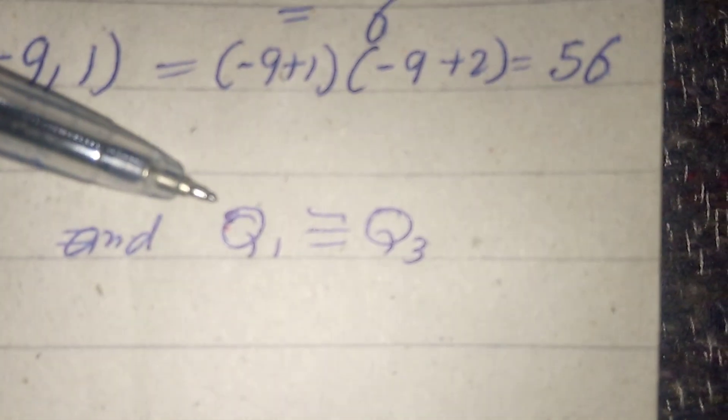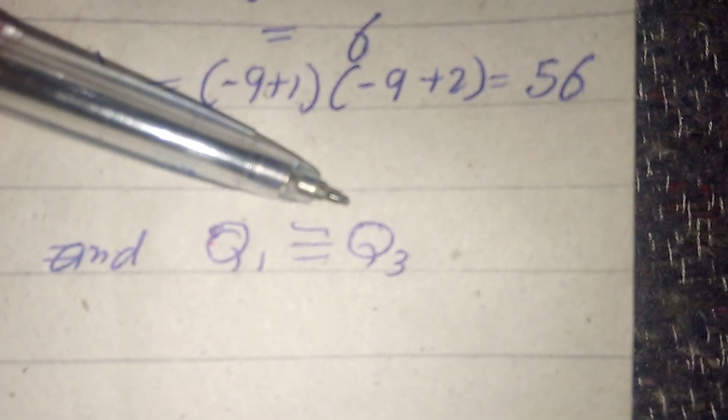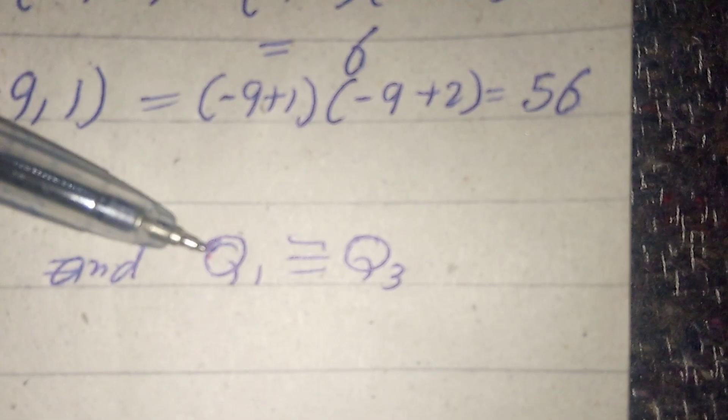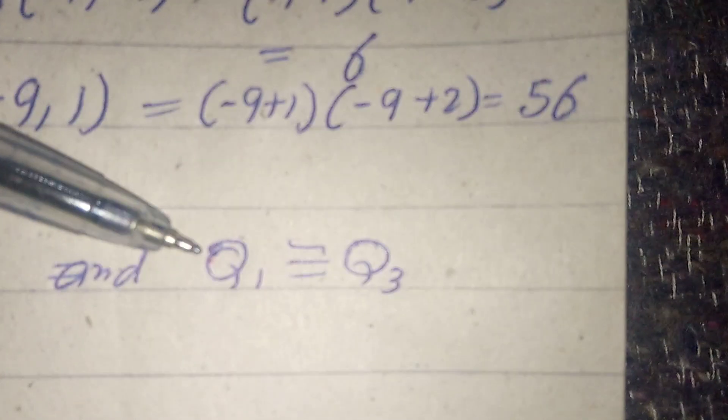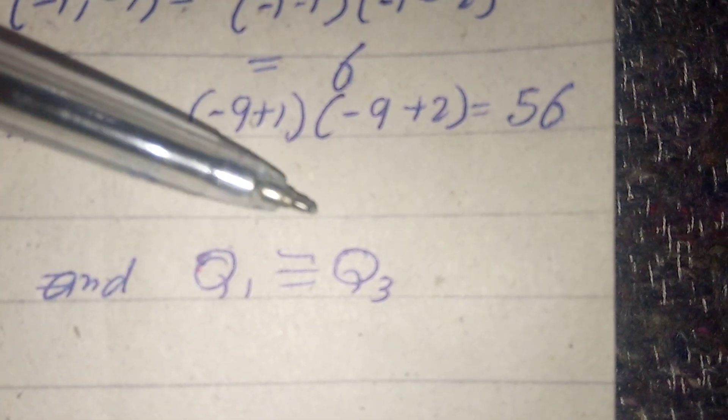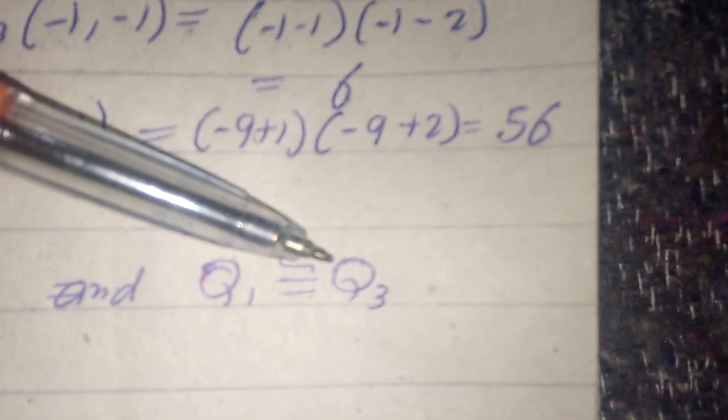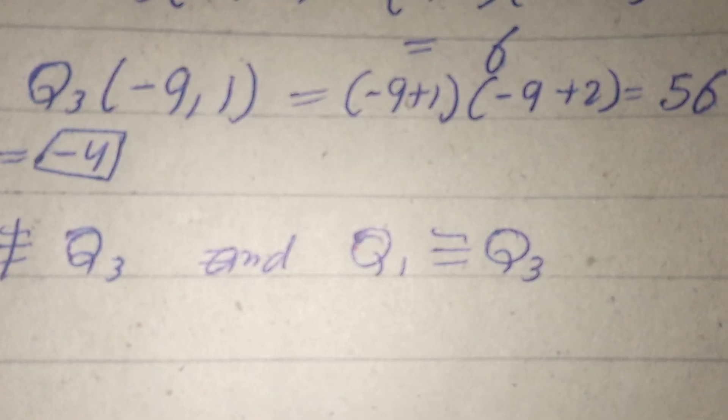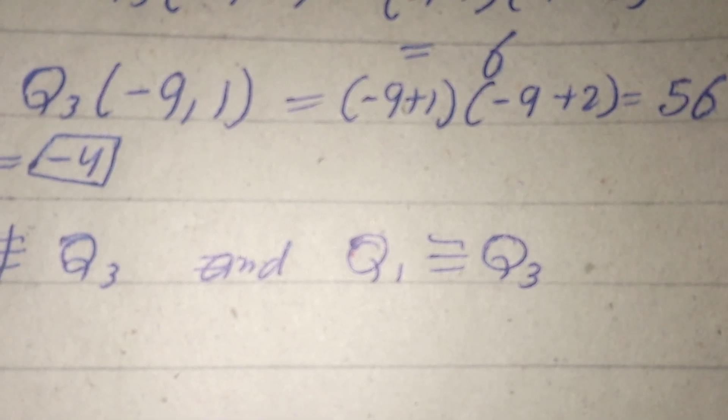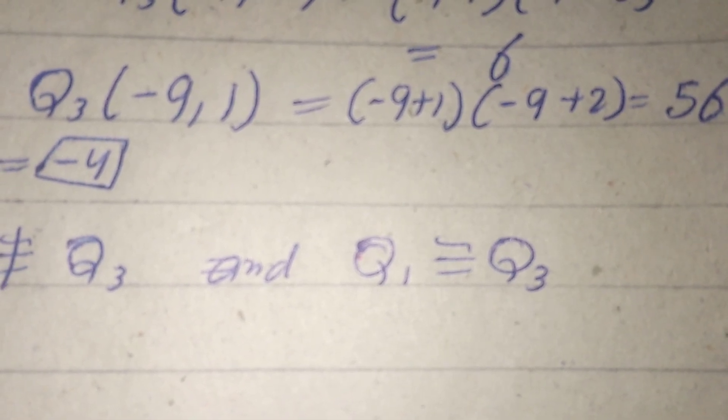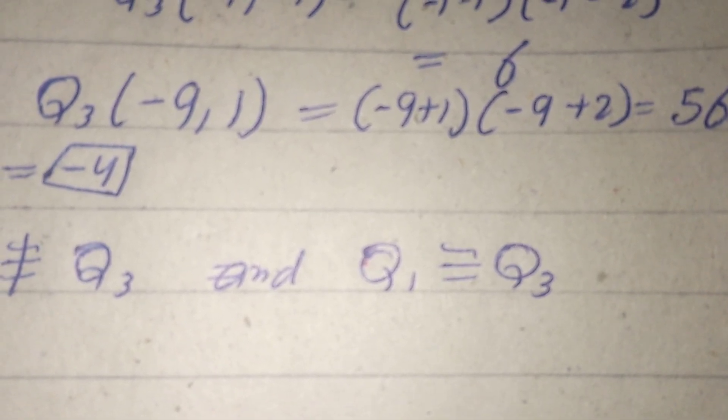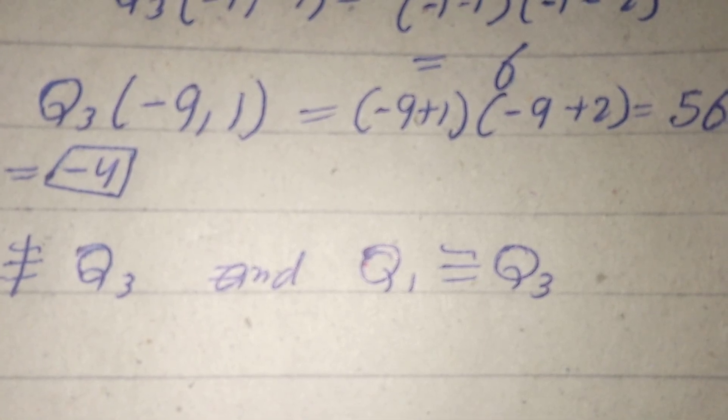So what remains is that q1 is equivalent to q3, because q1 can take positive and negative values. Similarly, q3 also takes positive and negative values. So we have shown that q1 is equivalent to q3, but they are not equivalent to q2.